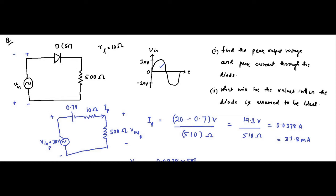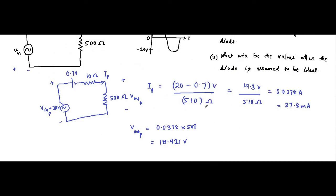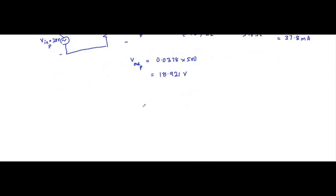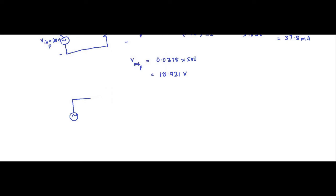The second part of the question asks for the values when the diode is assumed to be ideal — meaning no potential barrier voltage and nothing else. In this case, the diode will simply behave as a short circuit.